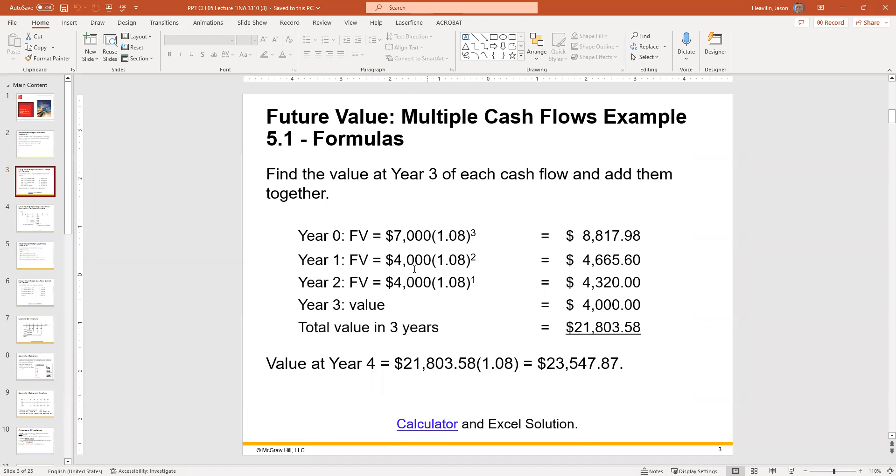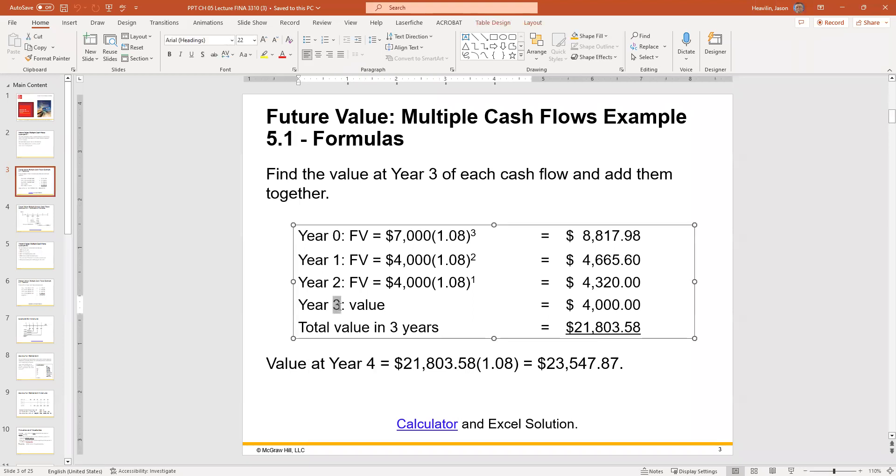The universal way to look at it is, if you want to know the value in year three in this case, and you are currently in year zero, you can do three minus zero, which is three. A year from now, when you do the $4,000 deposit, you want to know between year one and year three. So three minus one equals two, because it's going to be two years, two periods, and so on.